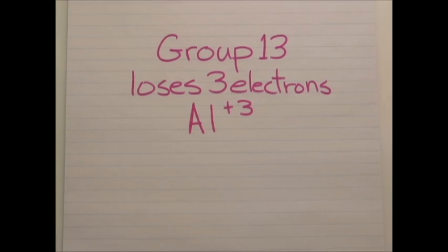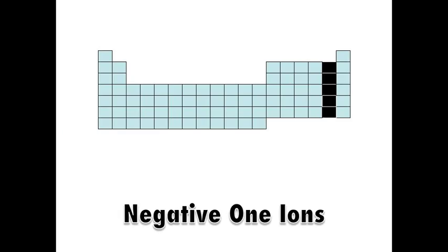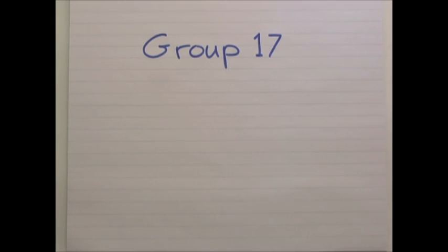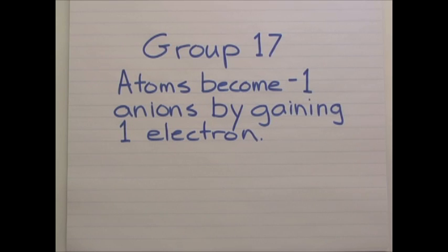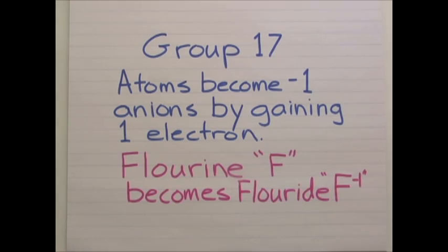Looking at negative 1 ions, these would largely come from group 17, where these atoms have become negative 1 anions by gaining one electron from somewhere. Take, for instance, the atom fluorine. By gaining an electron, it becomes the fluoride ion, negative 1 charge.